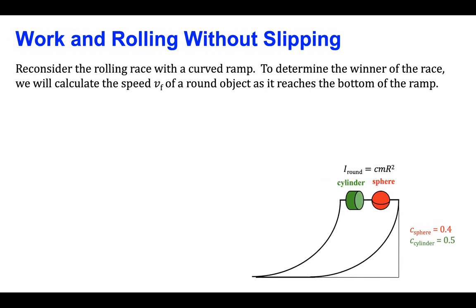In block four, we studied a rolling race that involved a cylinder and a sphere as they rolled without slipping down an inclined plane. In that study, we were able to apply Newton's Laws of motion to determine which round object got to the bottom first.